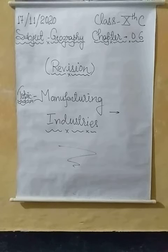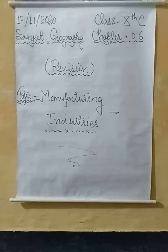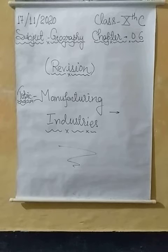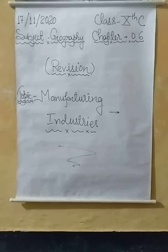Next, according to their main role: number one is basic or key industries — these industries supply their products as raw materials to manufacture other goods, such as iron and steel industry. Next is consumer industries — these industries produce goods for direct consumption such as cosmetics, utensils, etc.